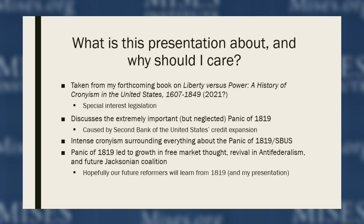More importantly, what is this presentation about and why should you care? This is taken from my forthcoming book, tentatively titled Liberty vs. Power: A History of Cronyism in the United States, 1607 to 1849. It goes through the history of special interest legislation. Cronyism is not legislation passed in the public interest, but for special interests — one group, a business, trying to get some sort of favor: a subsidy, tariff, regulation, or discriminatory tax on their competitors. Related to this, my narrative argues the Panic of 1819 was caused by the Second Bank of the United States credit expansion.